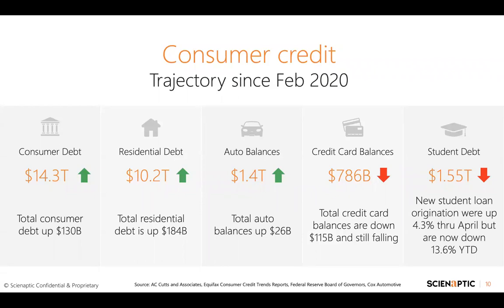Noteworthy, though, is that while overall debt has reached a new peak, household stress — measured by the financial obligations consumers have — has fallen to 13.6% of disposable income in Q2 from a level of 15% in Q1. The two key reasons being the low interest rate environment, which translates into lower payments on mortgages, and second, the forbearance program and the CARES Act relief, which has caused stress levels to be lower than at the beginning of the year.